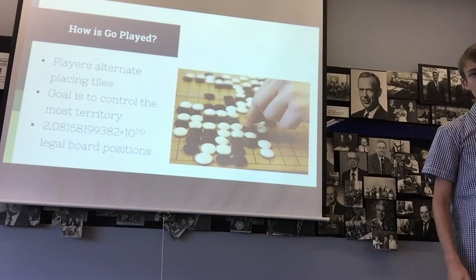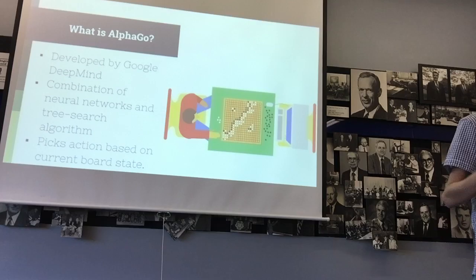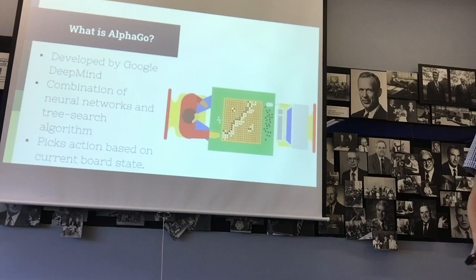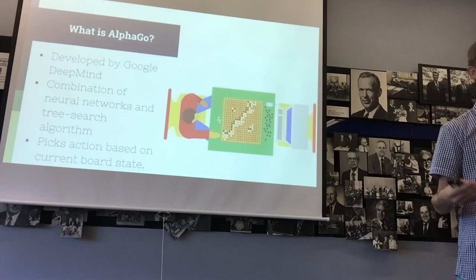So, what is AlphaGo? AlphaGo is a computer program developed by Google DeepMind. It tries to play the game of Go, it uses a combination of neural networks and tree search algorithm to look at the board and eliminate possible board moves until it picks the move that will lead to the highest chance of success, or victory, in this case.